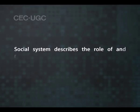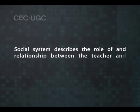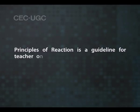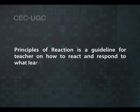Social system describes the role of and relationship between the teacher and pupils. In some models the teacher has a dominant role, in others pupils have dominance, and in yet another set the roles are equal. The support system explains the supporting conditions required, referring to additional requirements beyond usual human skills, capacities and technical facilities — this may include books, laboratory kits, multimedia materials, and other reference materials.